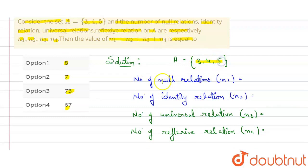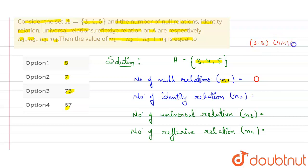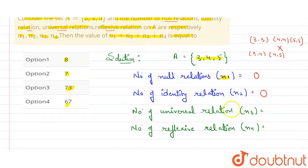For the null relation: since elements 3, 4, 5 are present in the set, the number of null relations N1 = 0. For the identity relation: it is a relation in which every element is related only to itself, so it would be {(3,3), (4,4), (5,5)} only. Therefore N2 = 0.